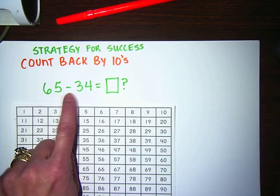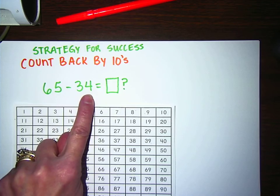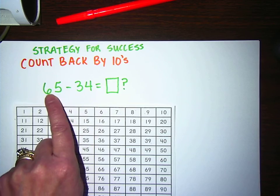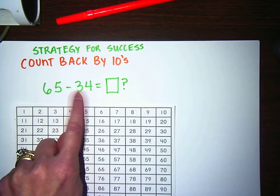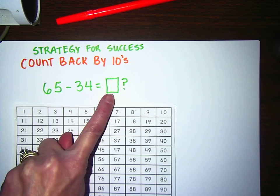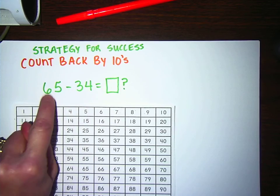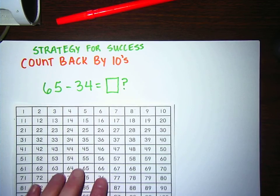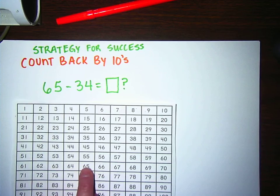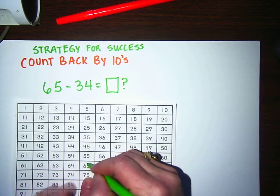This might be a problem like Mrs. Phillips has 65 cookies and somebody eats 34. How many cookies does she have left? So we know I'm going to start with 65. So what I do is I find the 65 on my hundreds chart, which is where my finger is, and I'm going to circle that.